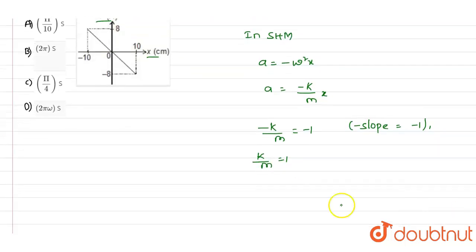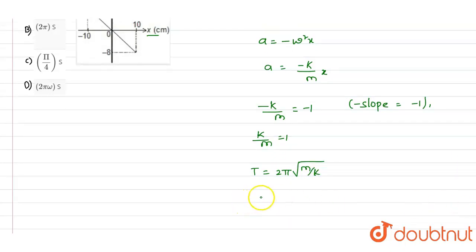And the time period value can be written as 2 pi into under root of m divided by k.